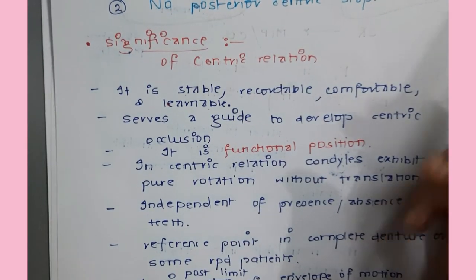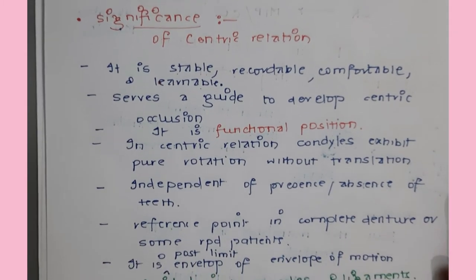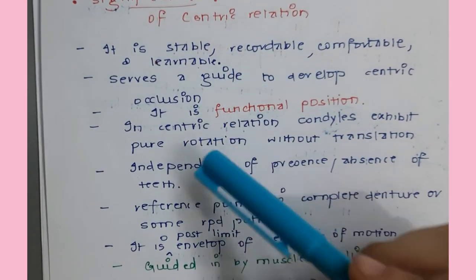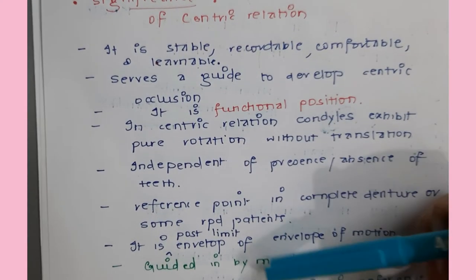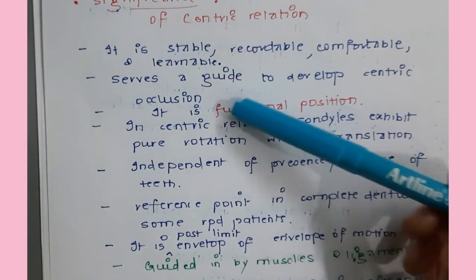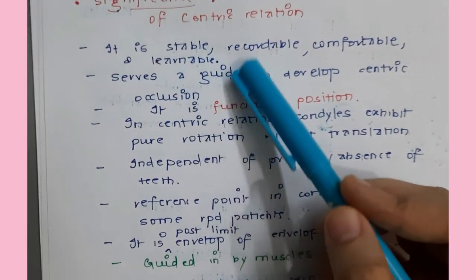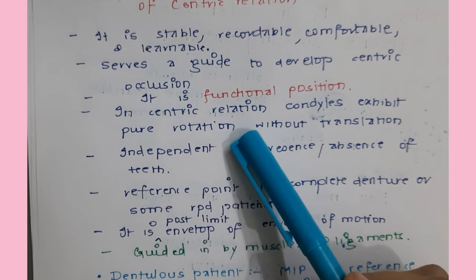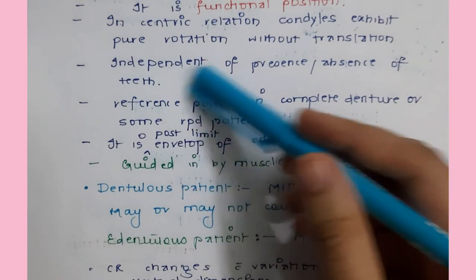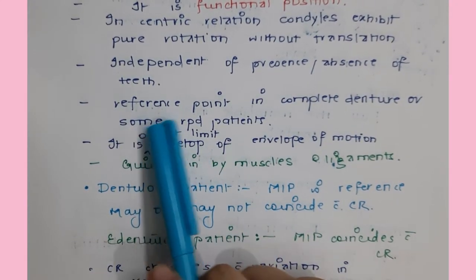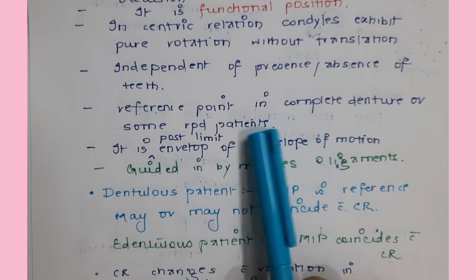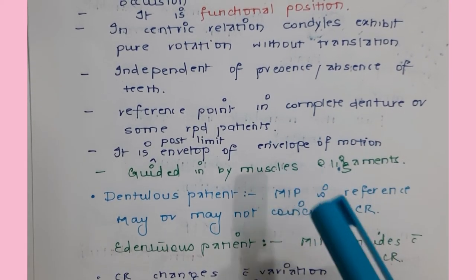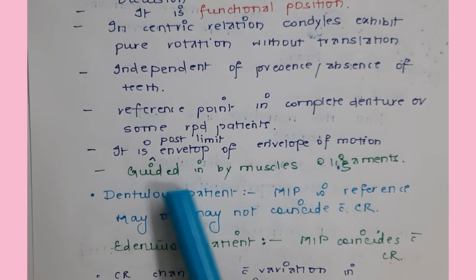The significance of centric relation is very important and frequently examined. It is stable, recordable, comfortable, and learnable - we can guide the patient in centric relation and they can perform functions in centric relation throughout life. It serves as a guide to develop centric occlusion and as a reference in edentulous patients to create occlusion. It is a functional position with pure rotation and no translation motion, independent of teeth. It is the posterior limit of the envelope of masticatory motion - the last step in the masticatory cycle - guided by muscles and ligaments.